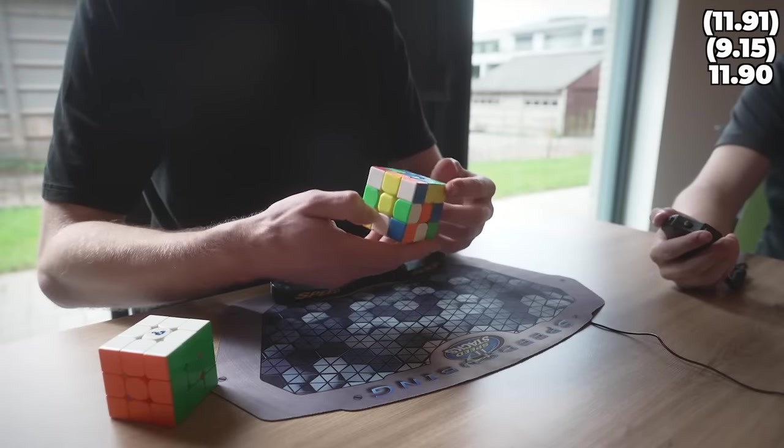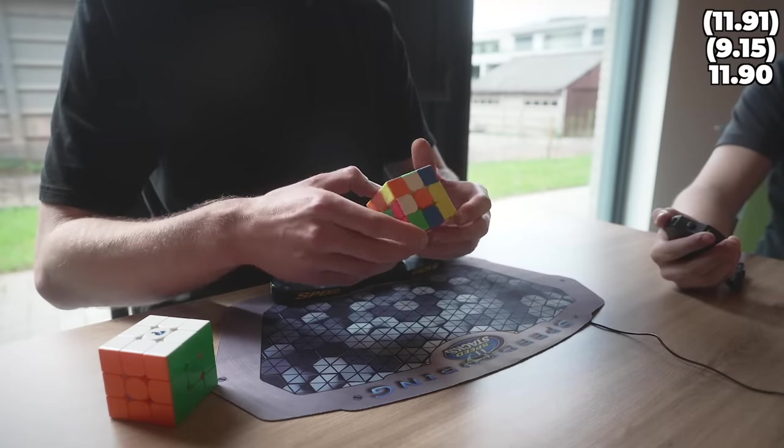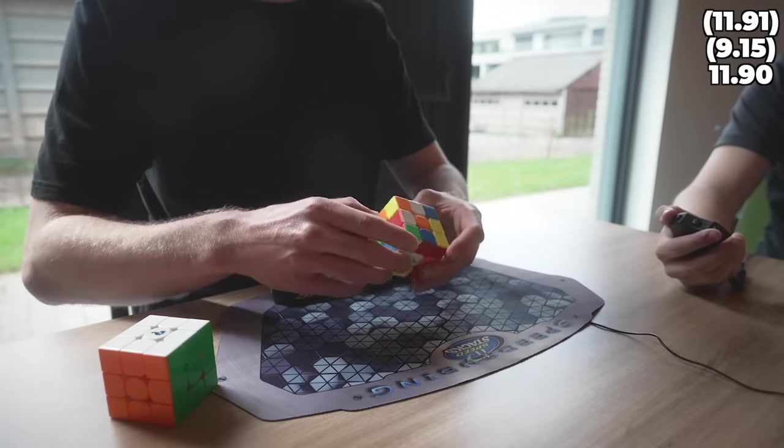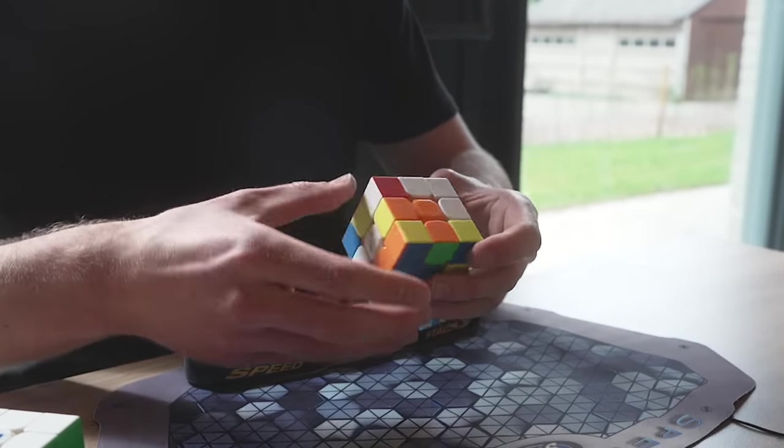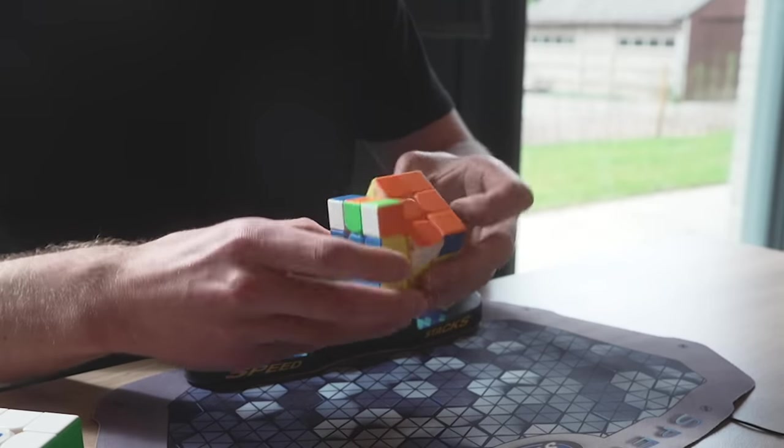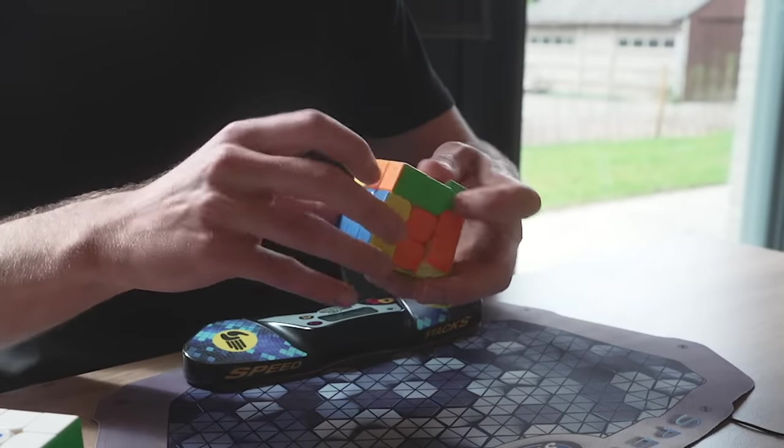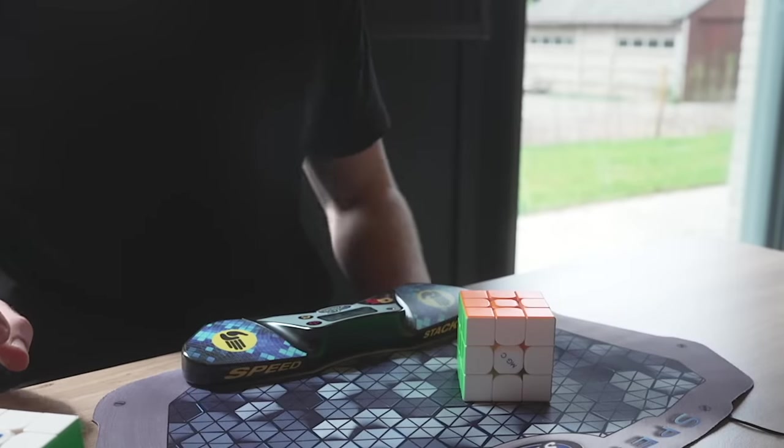But since there's two solves left in this average I could potentially get two five second solves and save the average with a counting 11. So let's see if that happens, going for a red cross right here for the fourth solve. Start pretty good, I couldn't find my second pair, the third pair big pause, for the fourth pair OLL, once again major lockup, another U perm, I wasn't even able to finish my U perm because of the lockups I was getting.